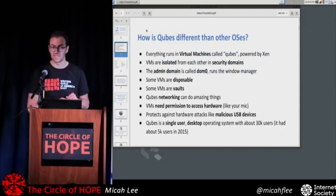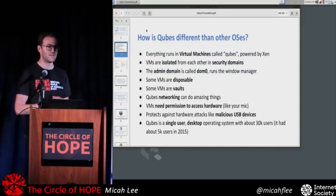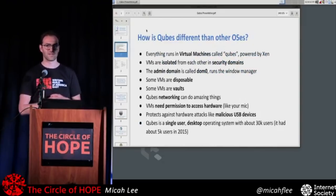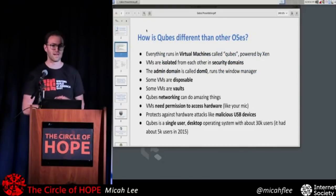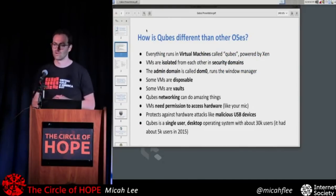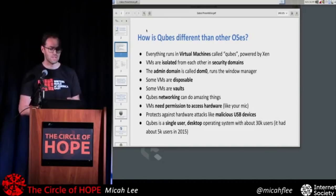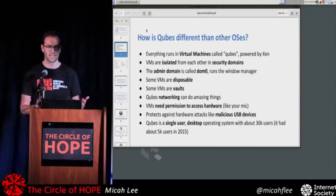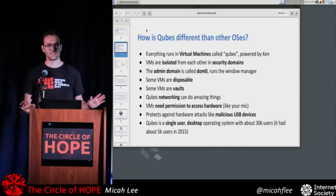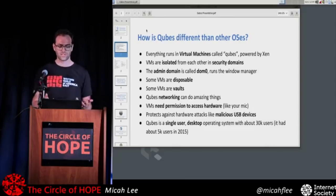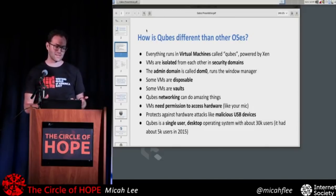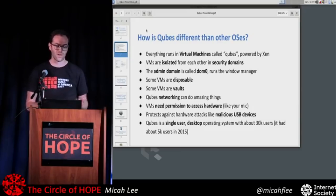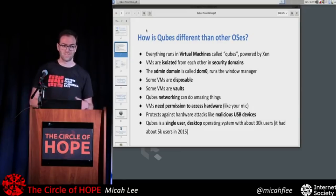Qubes is an operating system, but it's kind of fundamentally different than the operating systems most of us are familiar with, like Windows or Mac OS or Debian or Fedora or Ubuntu. In Qubes, you have this thin layer called DOM0. It runs a hypervisor called Xen, and basically everything else is run inside of virtual machines. The virtual machines provide isolation, and they can do a lot of cool things. Different virtual machines are called different security domains.